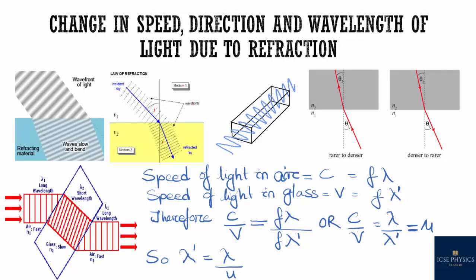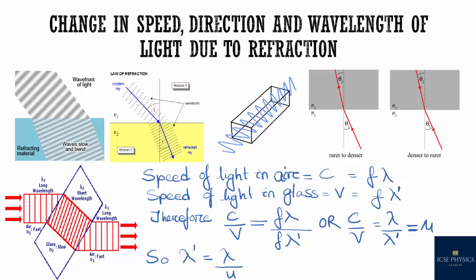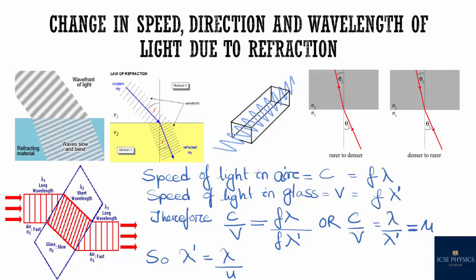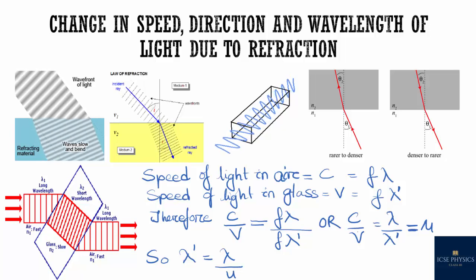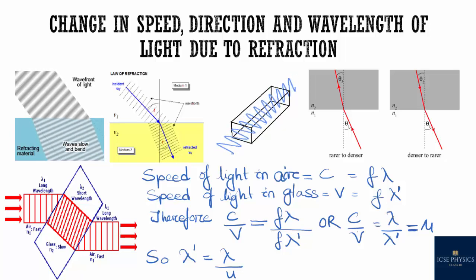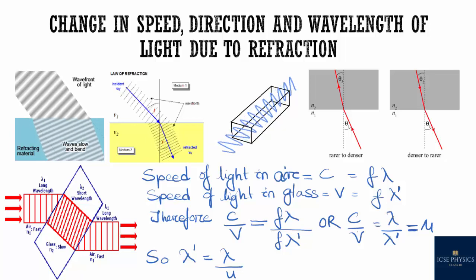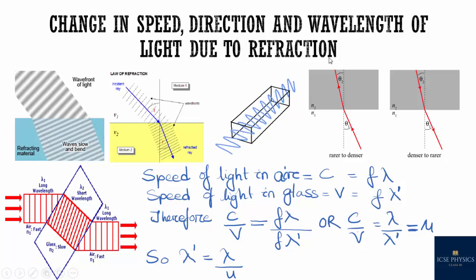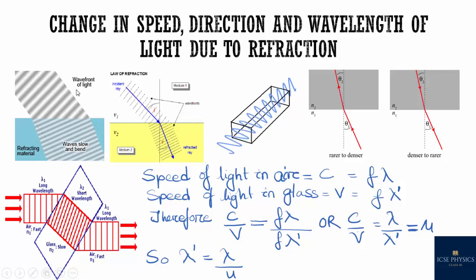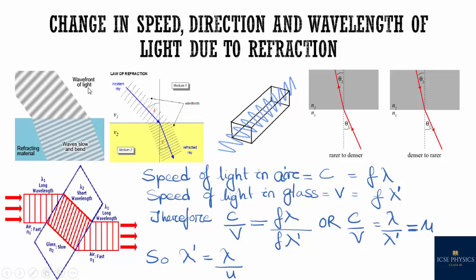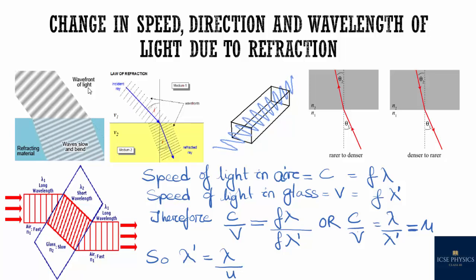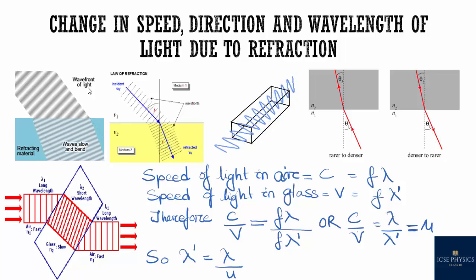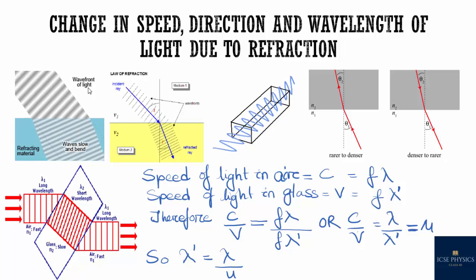Now let's see what happens to speed, direction, and wavelength of light due to refraction. Due to the change in speed of light when passing from one medium to another, the direction of the ray changes. When light travels in air, it travels at 3 × 10⁸ m/s. In water, the speed is less. So due to refraction, there is a change in both direction and speed.